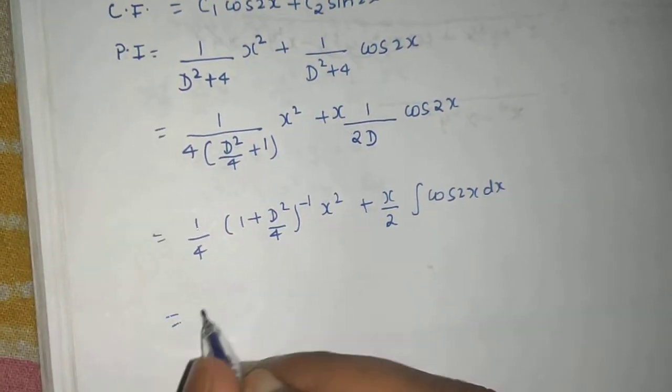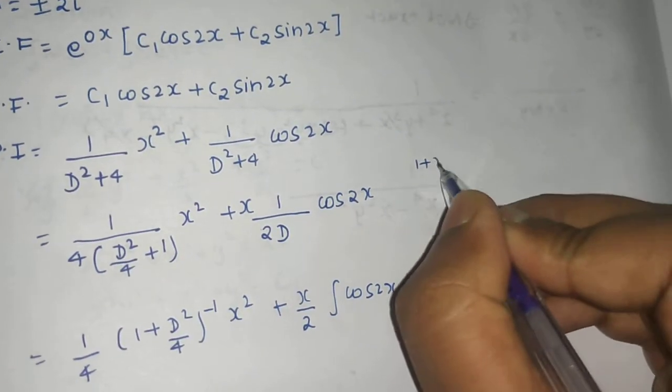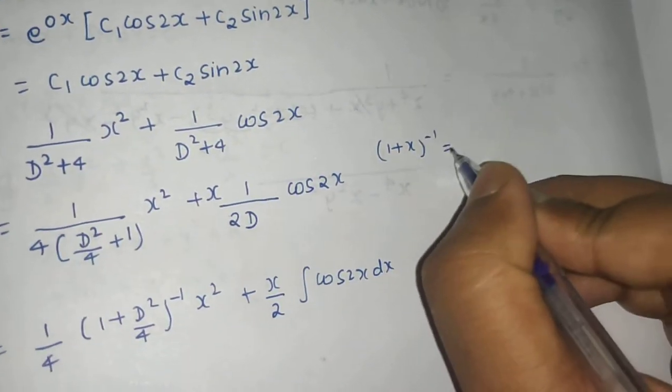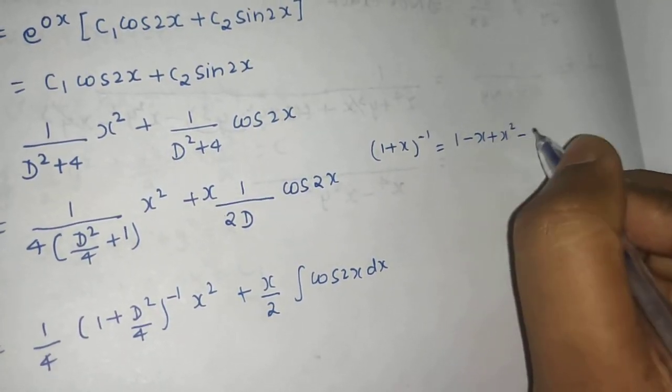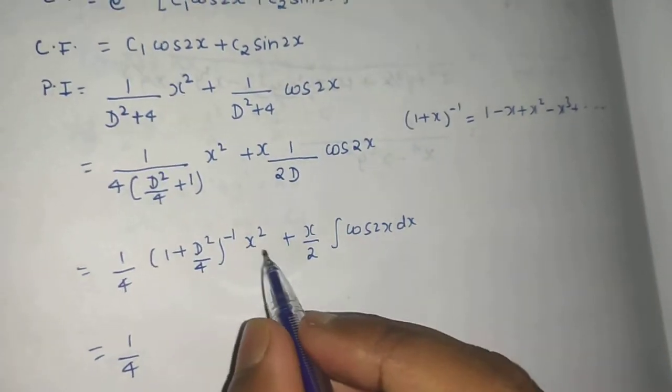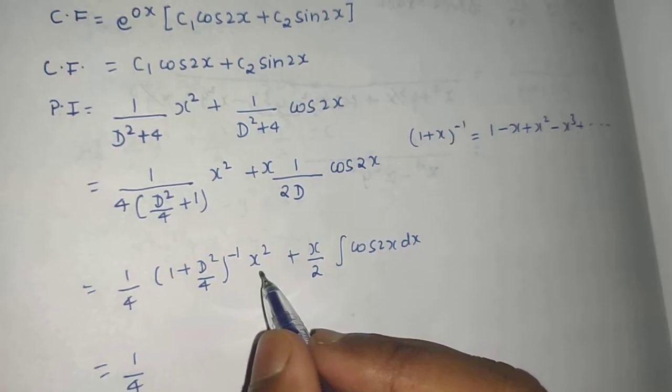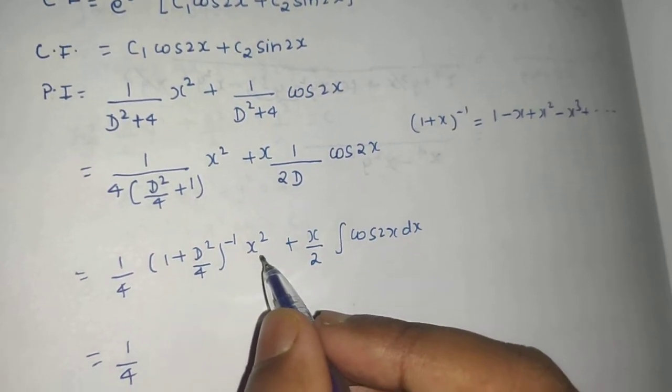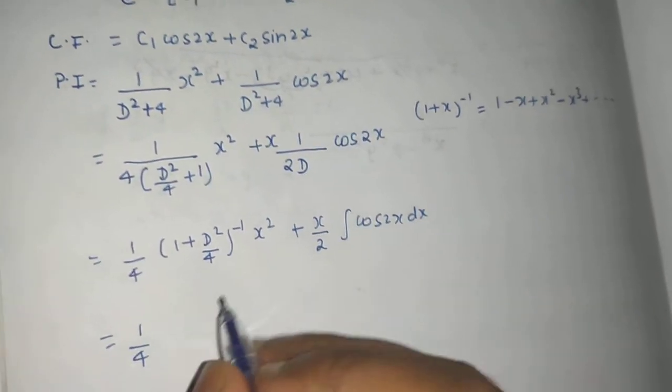Now here 1/4, (1 + x)^(-1). Since here is plus so alternate plus minus. So 1 - x + x² - x³ plus so on. So x². So third derivative is 0. First derivative is 2x. Second derivative is 2 and third derivative is 0. So we don't need to go higher than third derivative.